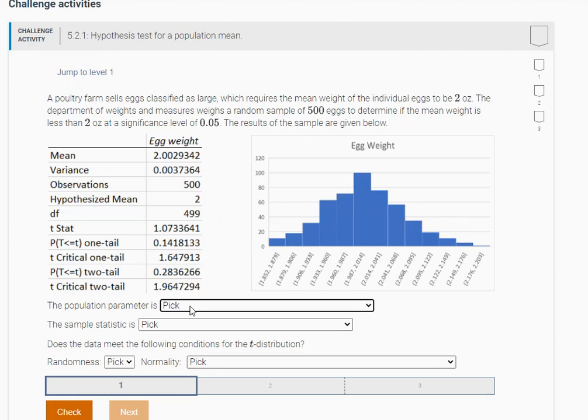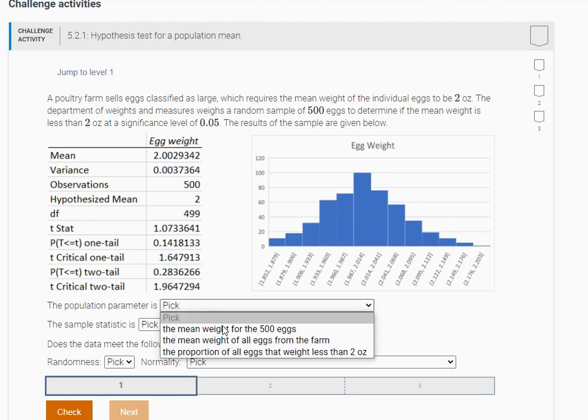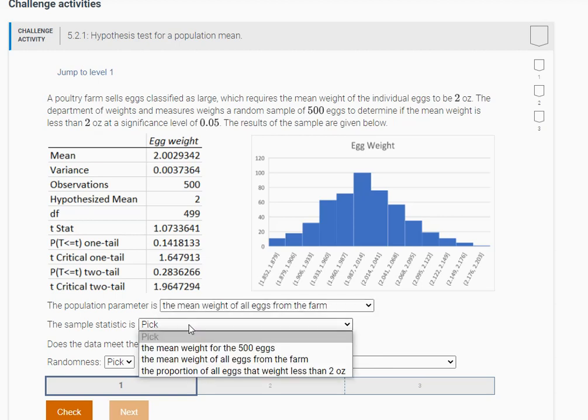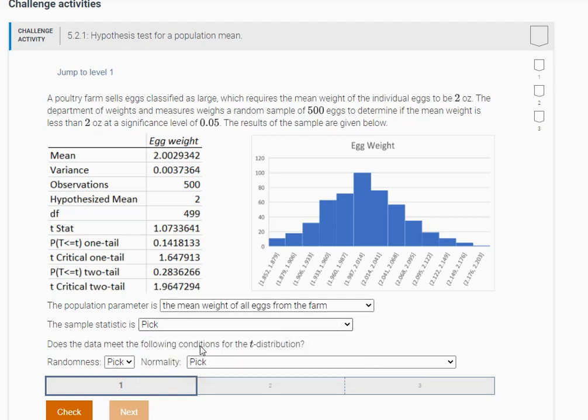So it says the population parameter here. What are they investigating? Well, it looks like the mean weight of all eggs on the farm, because they want to know if the mean of all the eggs is at least two ounces. And the sample statistic then here would be the mean weight of the 500 eggs that they collect.